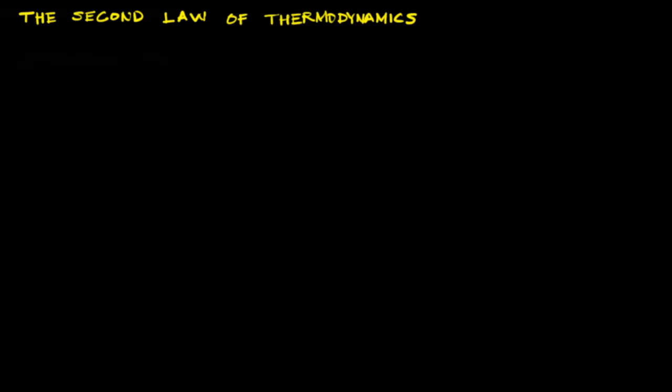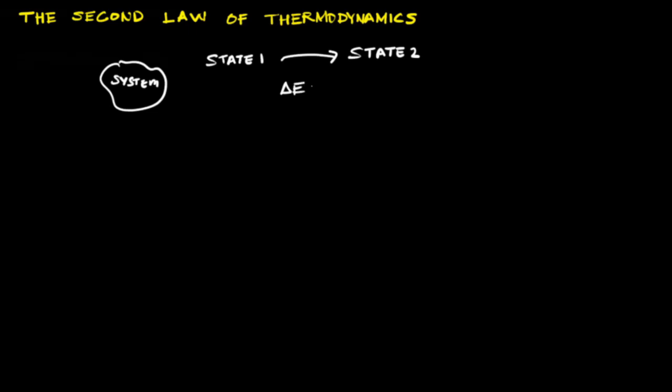In this and the next few lectures we are going to study the second law of thermodynamics. The first law of thermodynamics is the principle of conservation of energy for thermodynamic systems. For a closed system, delta E equals q plus w, and this first law cannot be violated. However, this doesn't mean that a transformation obeying the first law can actually occur — you may be able to go from state 1 to state 2 but not from state 2 to state 1.